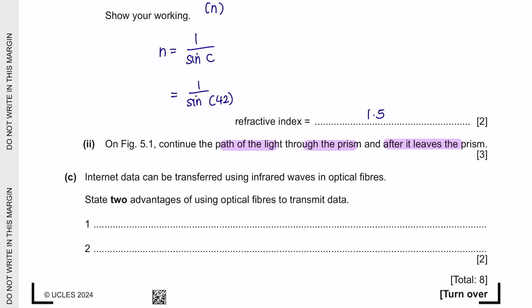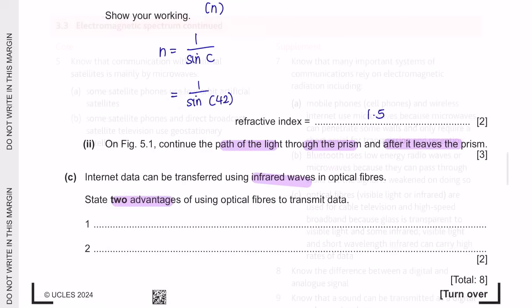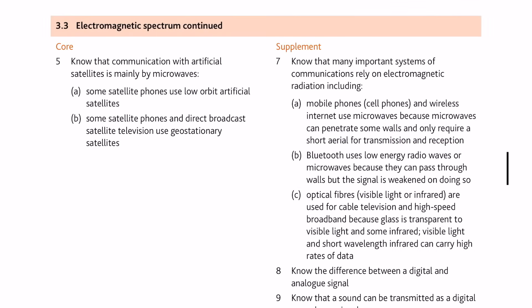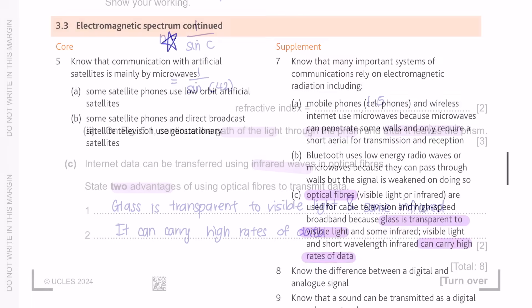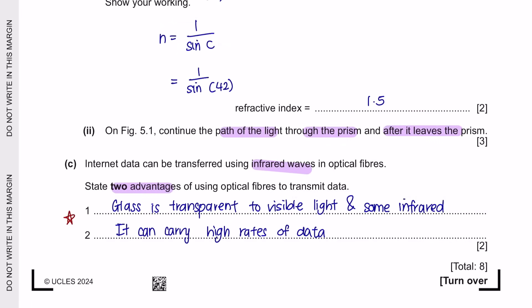Question part C: Internet data can be transferred using infrared waves in an optical fiber. State two advantages of using optical fibers to transmit data. From the course specification under chapter 3: optical fibers are transparent to visible light and can carry high rates of data.